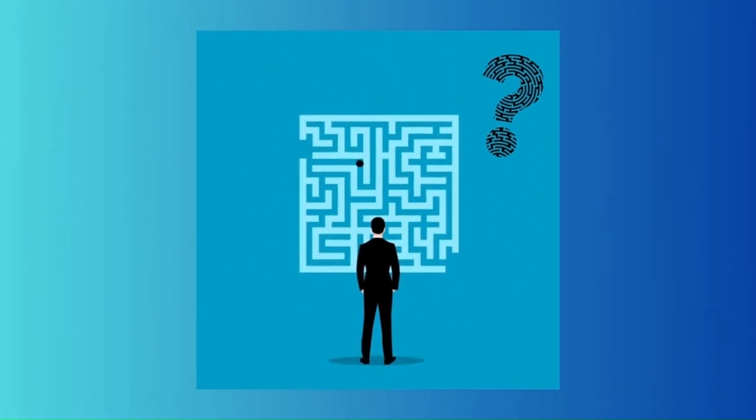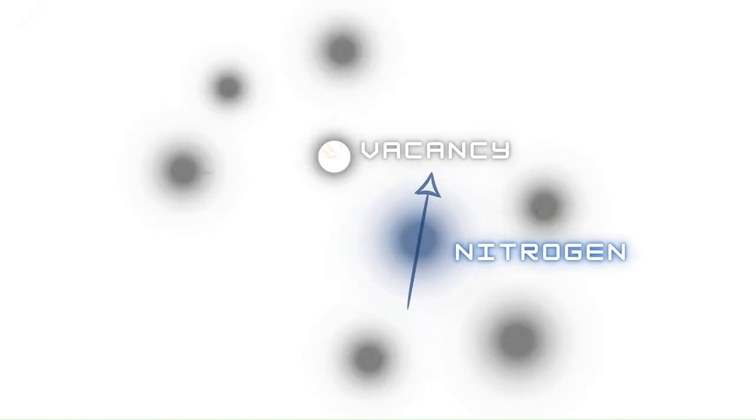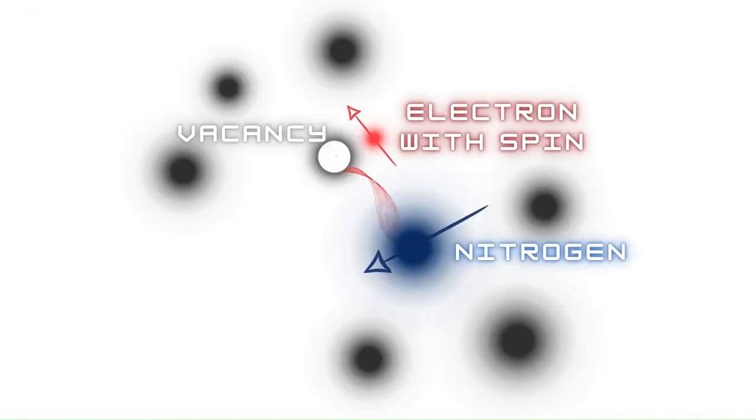But what exactly are nitrogen vacancy centers? They are tiny imperfections within the diamond lattice. A nitrogen vacancy center is a defect formed when a nitrogen atom is substituted for a carbon atom next to another lattice site also missing a carbon atom, namely a vacancy.